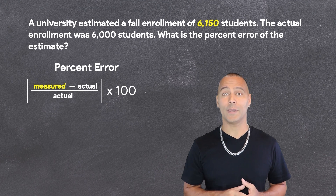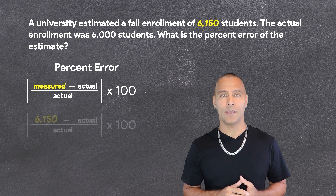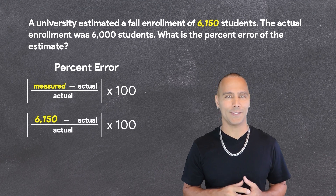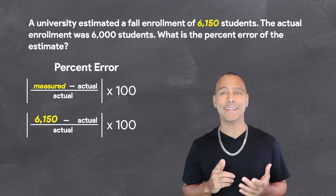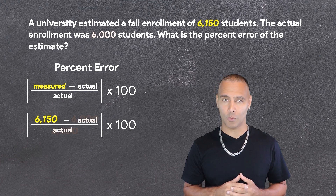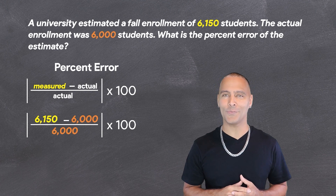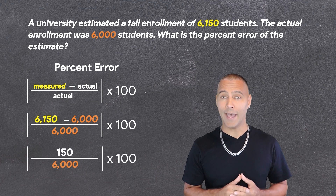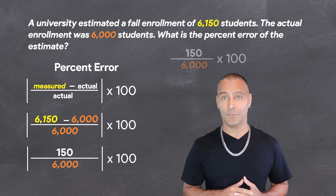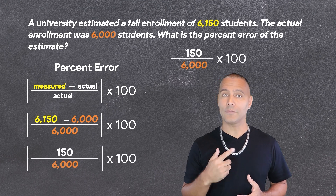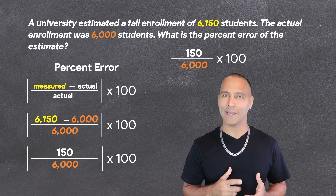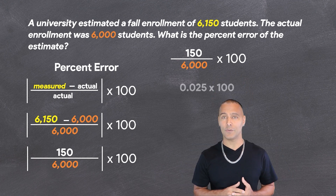The measured value in this case is a predicted enrollment of 6,150. From that, we subtract the actual enrollment of 6,000, which results in 150. Now, we take the absolute value of 150 out of that enrollment of 6,000 and express as a decimal by dividing. That results in 0.025.